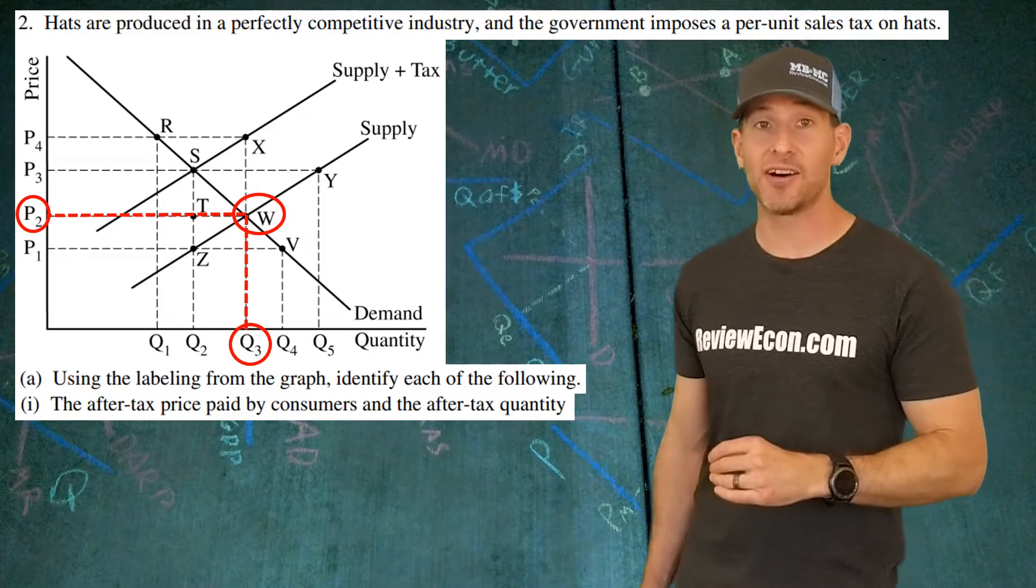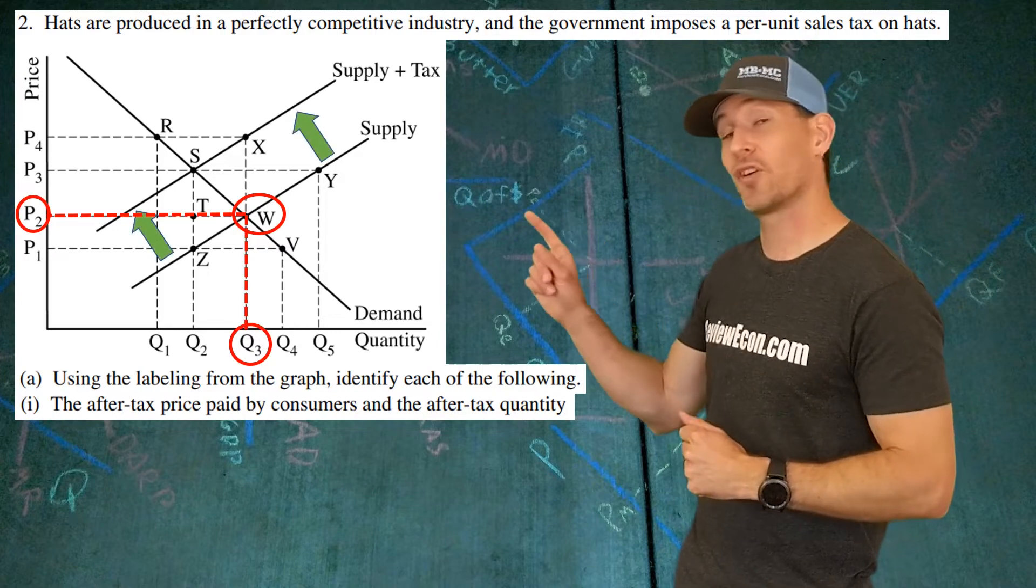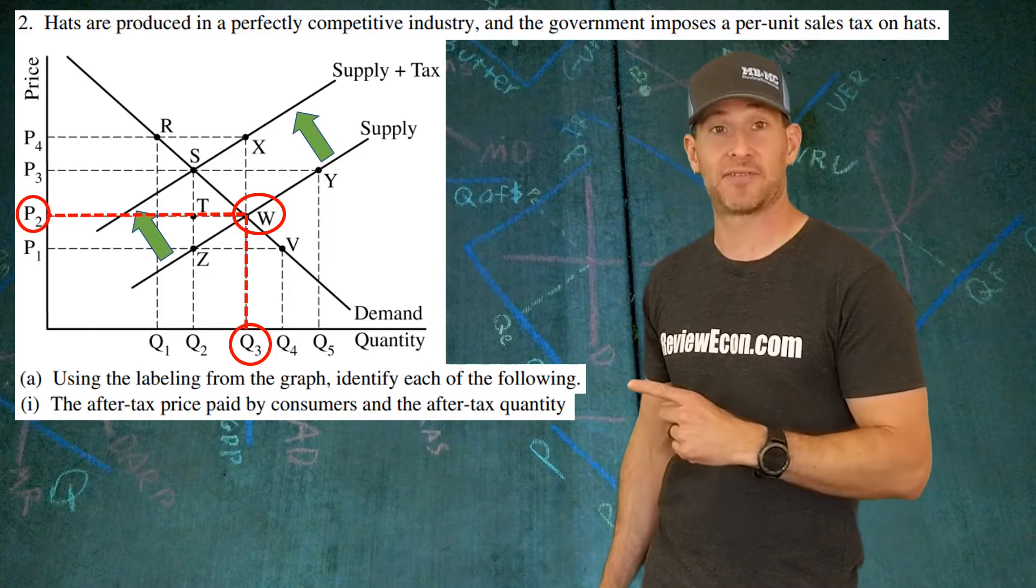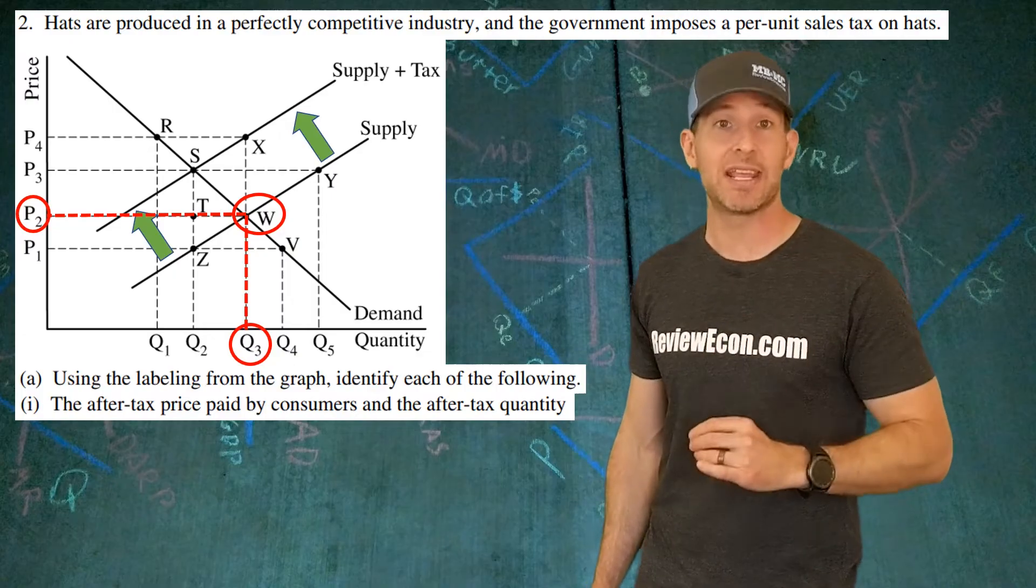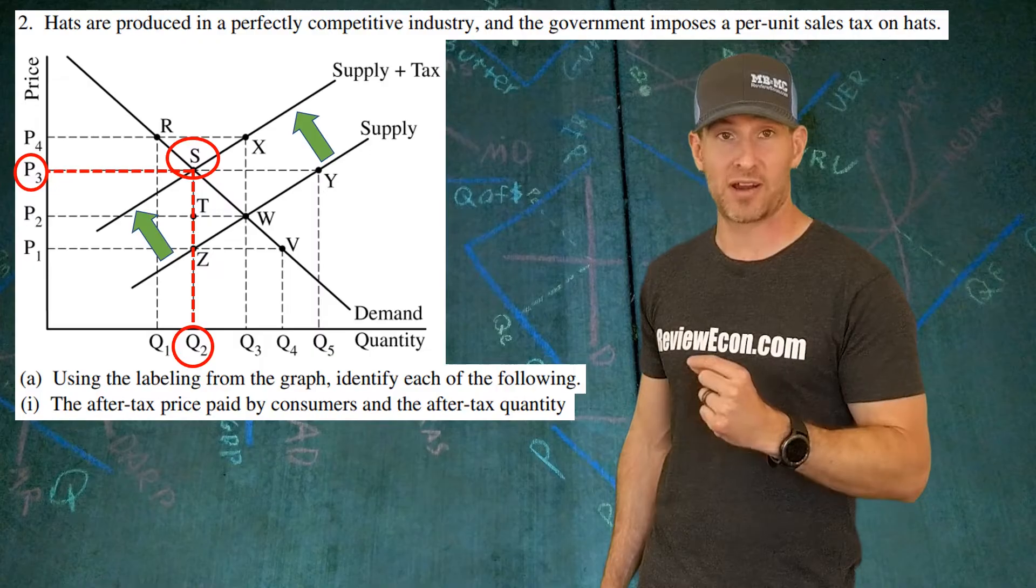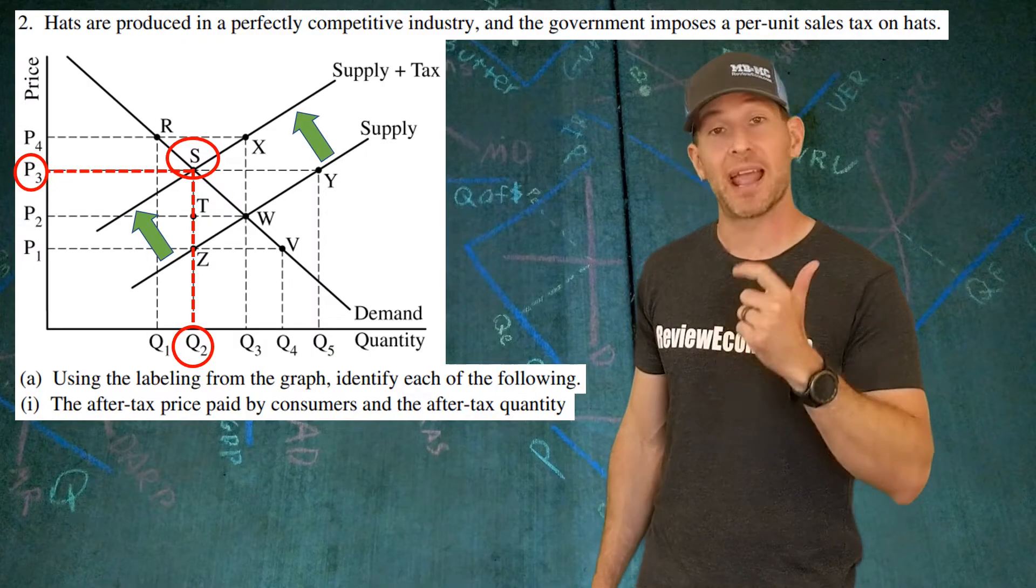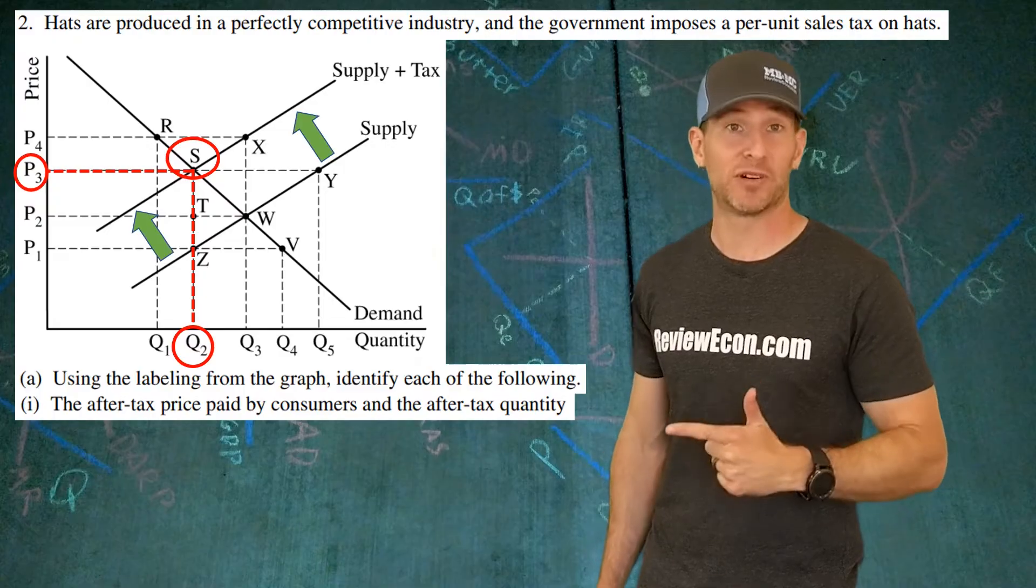As a result of the tax, the supply curve shifts the vertical distance of that tax to the left, giving us a new equilibrium price and quantity. That price and quantity is the price that consumers will pay and the quantity of hats that will be sold.